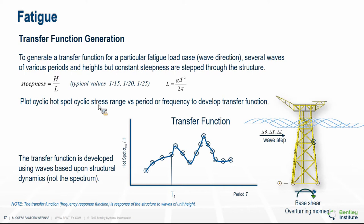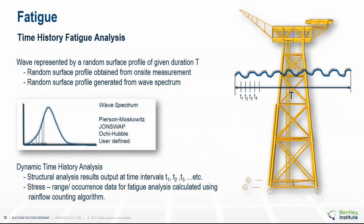To determine the transfer function at all locations around each joint in the structure is a considerable task. The standard practice is therefore to develop a transfer function corresponding to either the base shear or the overturning moment. When determining the transfer function, care must be taken to choose waves such that all the drops and peaks are accurately captured, commonly selecting many waves around the natural period and fewer further away. You must plot the transfer function and ensure you are satisfied with its quality before conducting a spectral fatigue analysis.